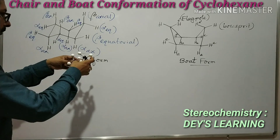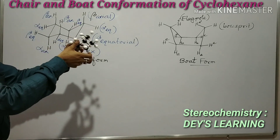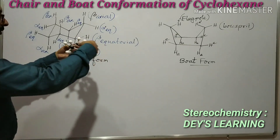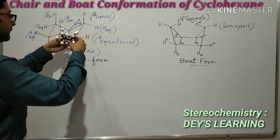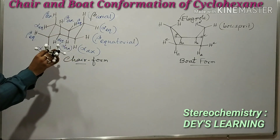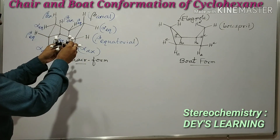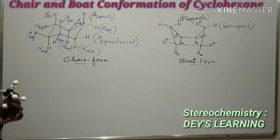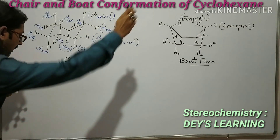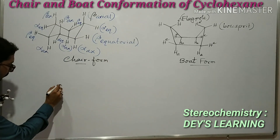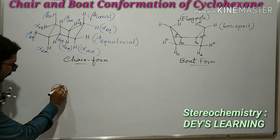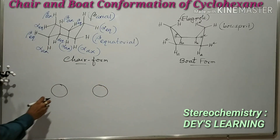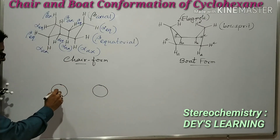The chair conformation, if we look at it, is this one — if we move this carbon down, this is the chair conformation. Now if we want to draw the chair conformation in a Newman projection, we see the following.